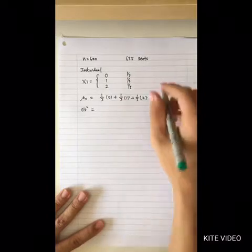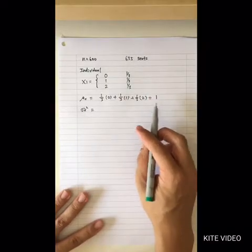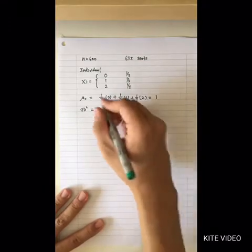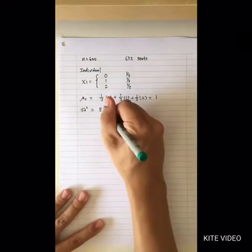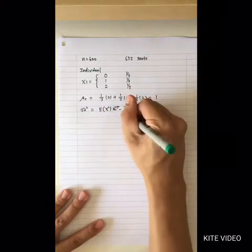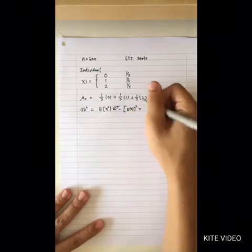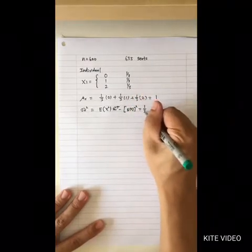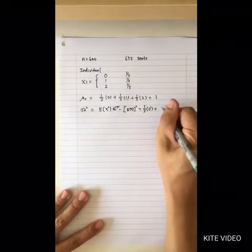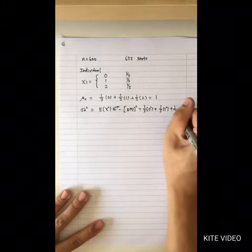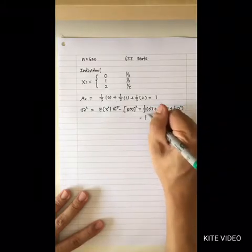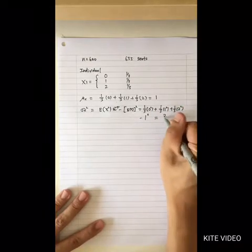As a result, you will get 1. This is the expected value of the parents per student. For the variance, you apply the formula E[x²] minus the square of the expected value of x. This is equal to 1/3 times 0², plus 1/3 times 1², plus 1/3 times 2², minus the square of the expected value, which equals 2/3.